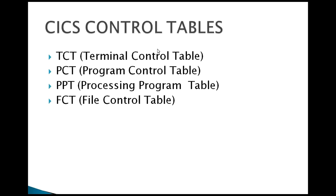Next is PCT, the Program Control Table. It stores the transaction ID and its corresponding program ID. Whenever a new transaction is initiated, CICS first checks whether the transaction exists in PCT and what program is associated with it. It then goes to the PPT, the Processing Program Table, which checks whether the actual program exists and verifies the load module of that program.